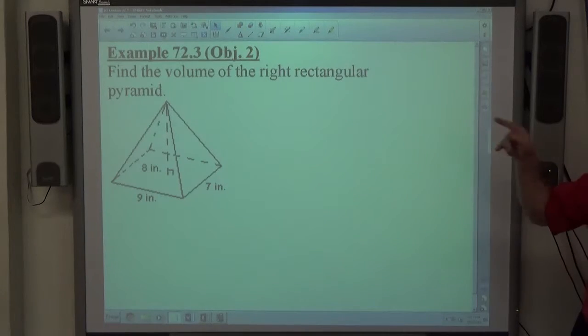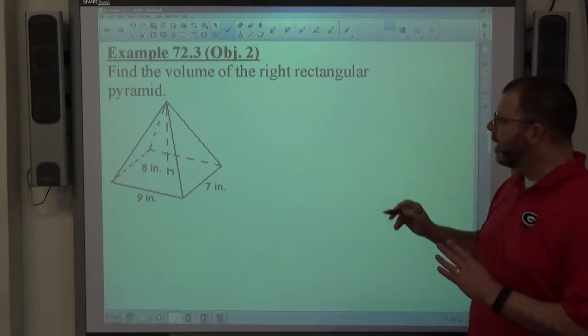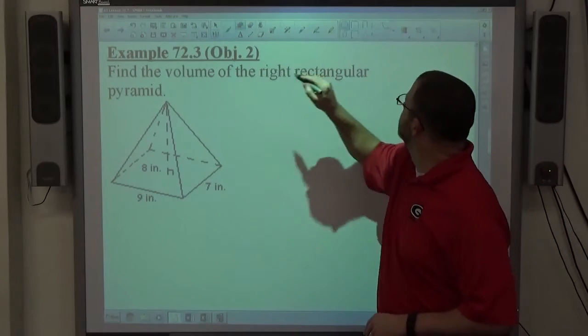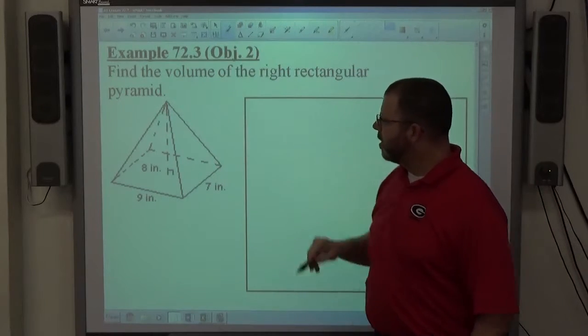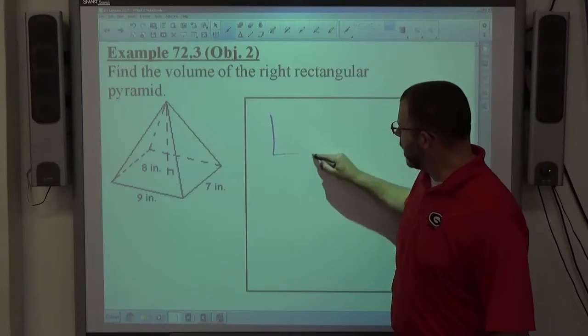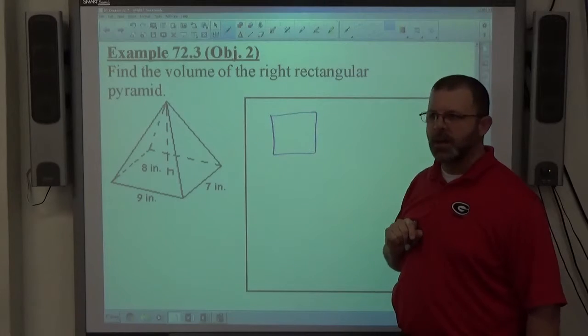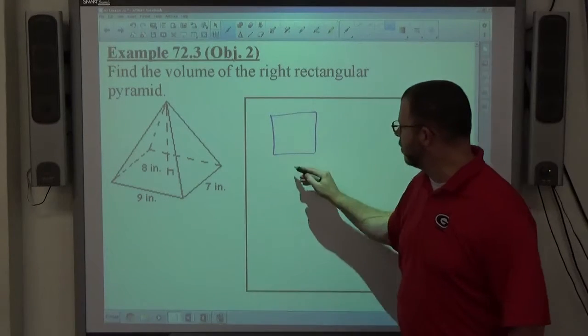It says find the volume of the right rectangular pyramid. So if I'm doing this problem on my paper, here's the homework box where I would do my homework. Step one, draw the base. It's a rectangle. Dimensions of this rectangle are 9 inches by 7 inches.